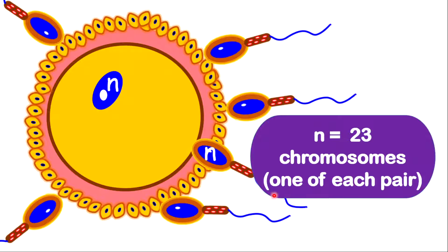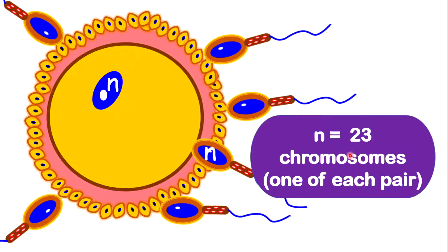If you notice, there is an N within the sperm cell and there is also an N within the egg cell. The N represents the haploid number of chromosomes, which means half the number of chromosomes. So, the egg cell and the sperm cell are classified as haploid cells. The haploid number in human beings is 23, which means one of each pair of the total chromosomes.